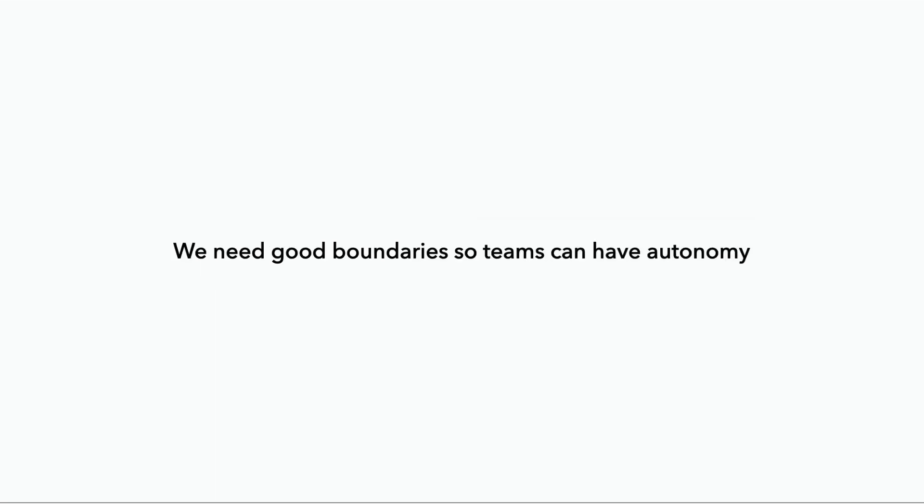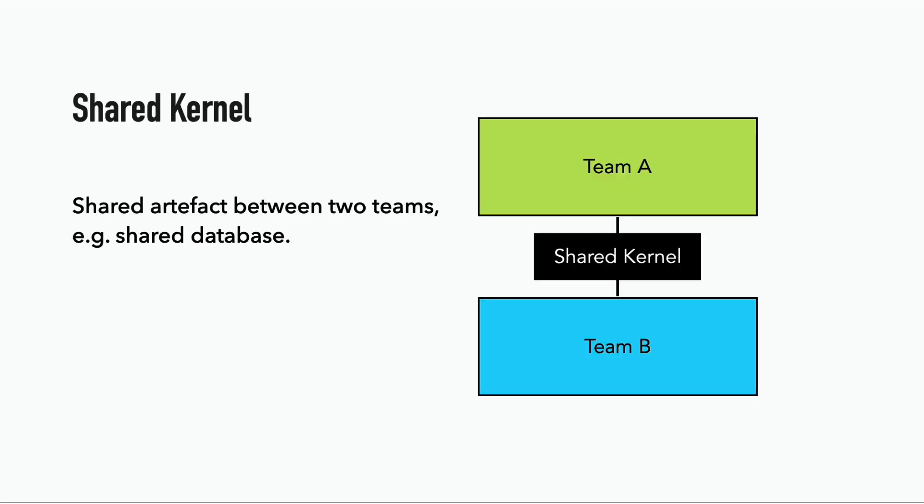In general, we need to have good boundaries between teams so they can have the autonomy to make their own decisions and do the best job they can. Another approach is shared kernel, in which two teams have some shared artifact in their system — it might be a shared NPM module or even a shared database. This has a high degree of coupling and requires a lot of coordination between the teams. I wouldn't label it an anti-pattern just yet, but you do want to use this with caution.